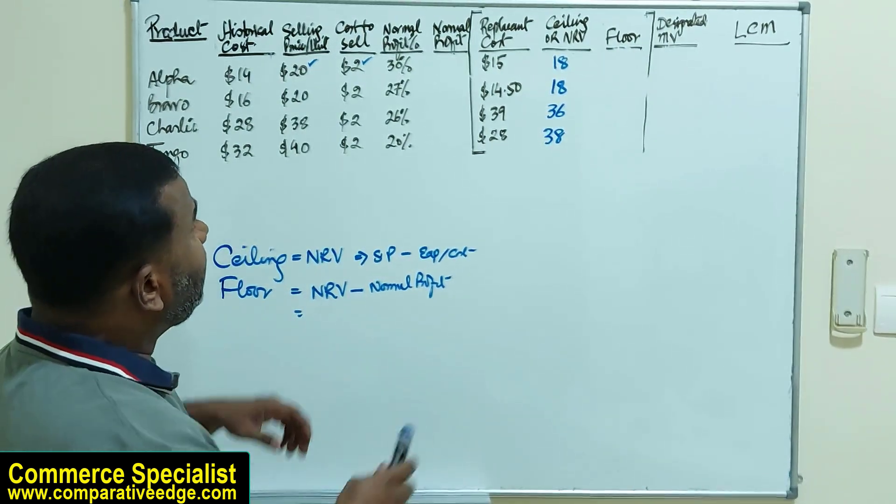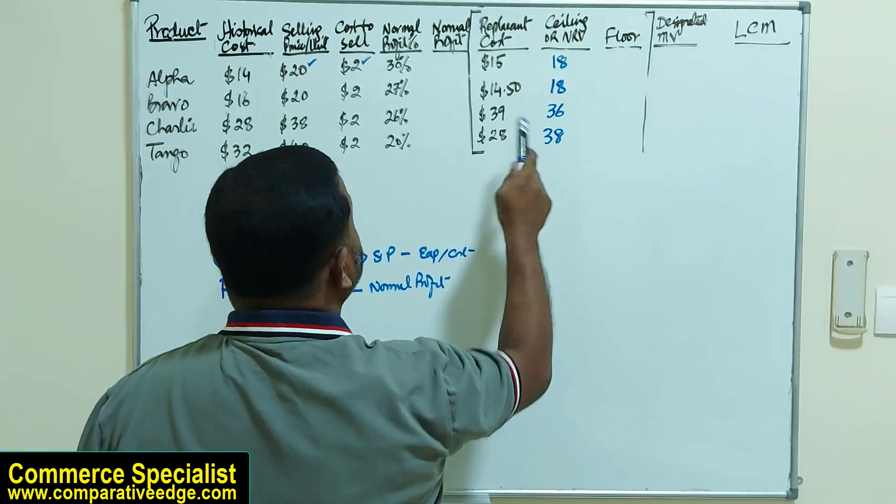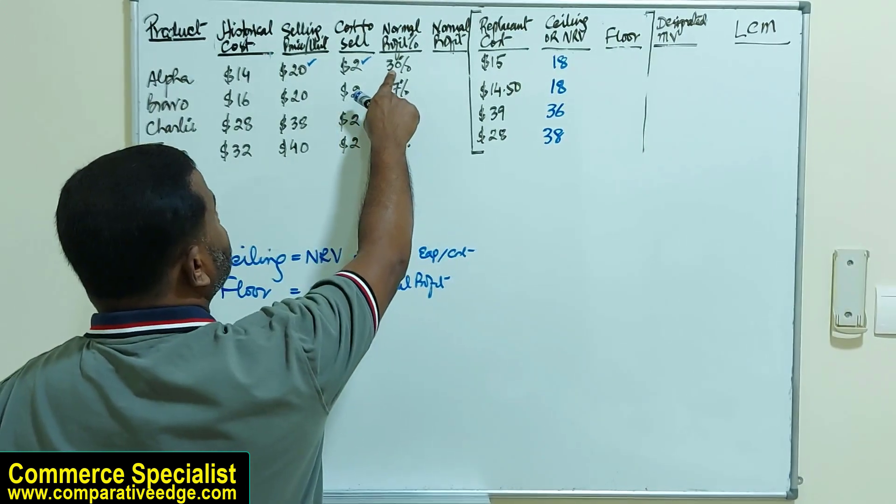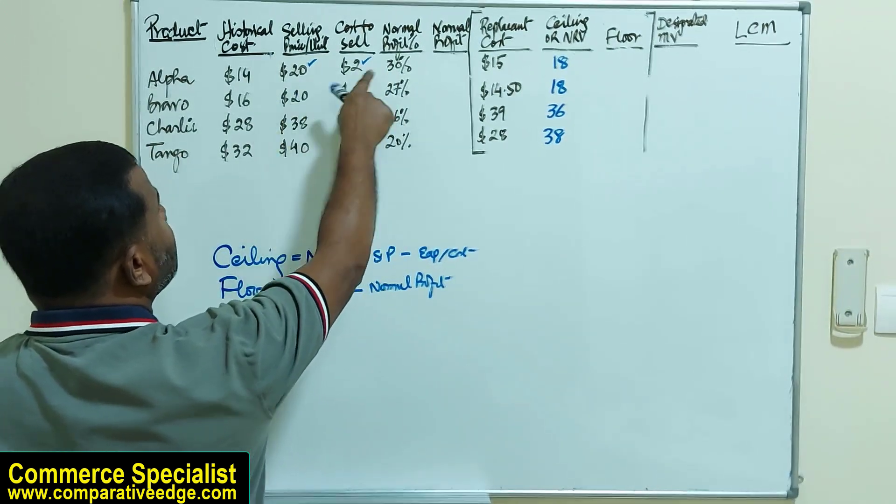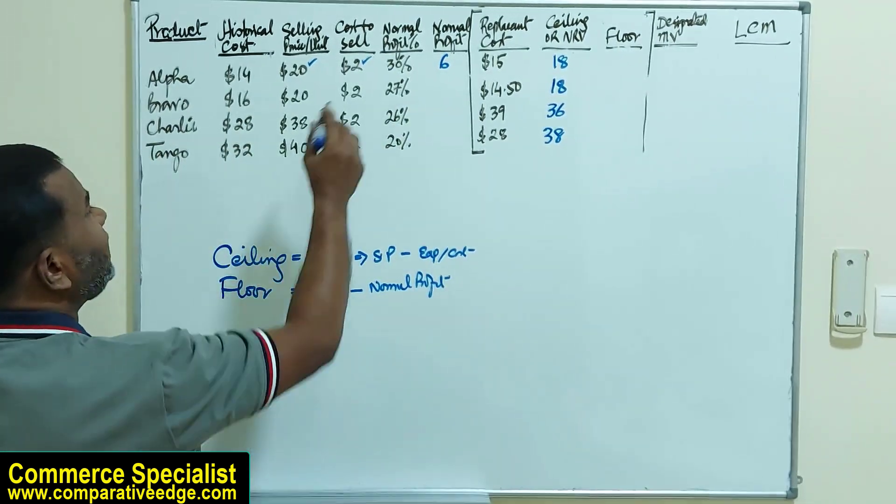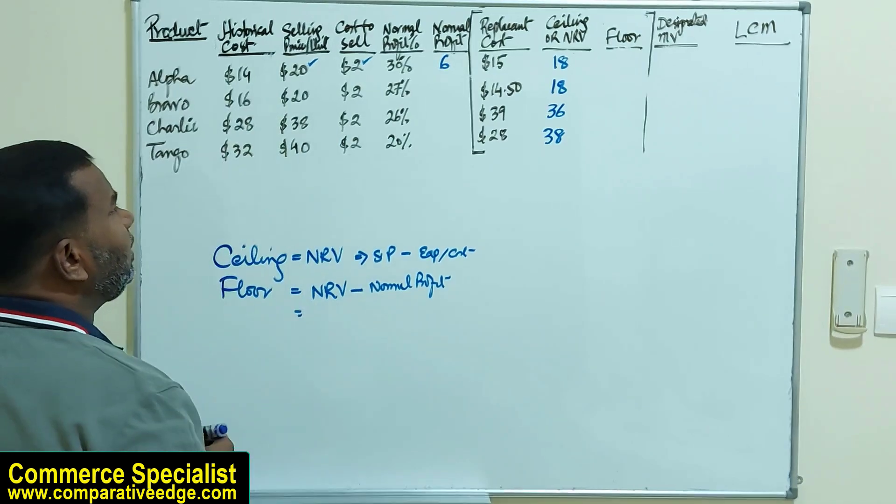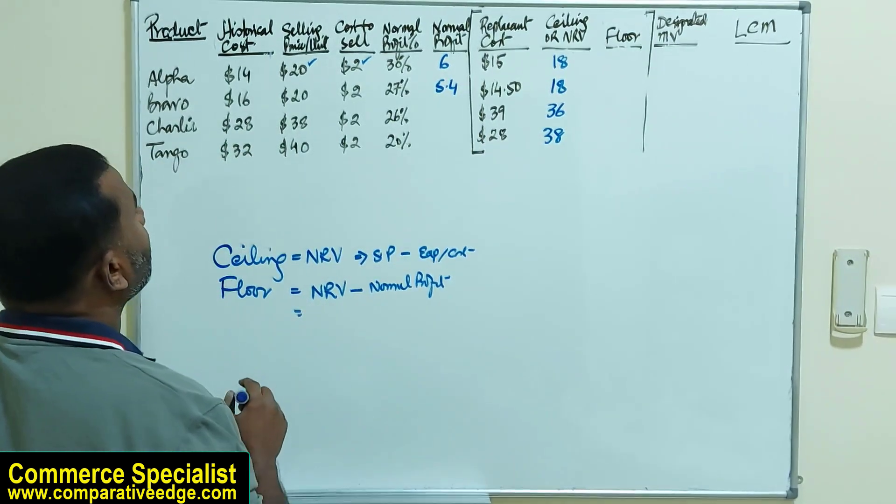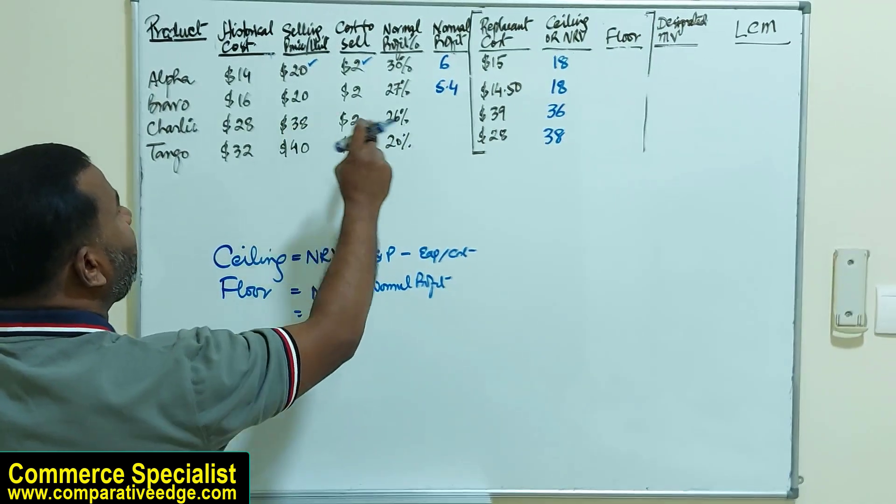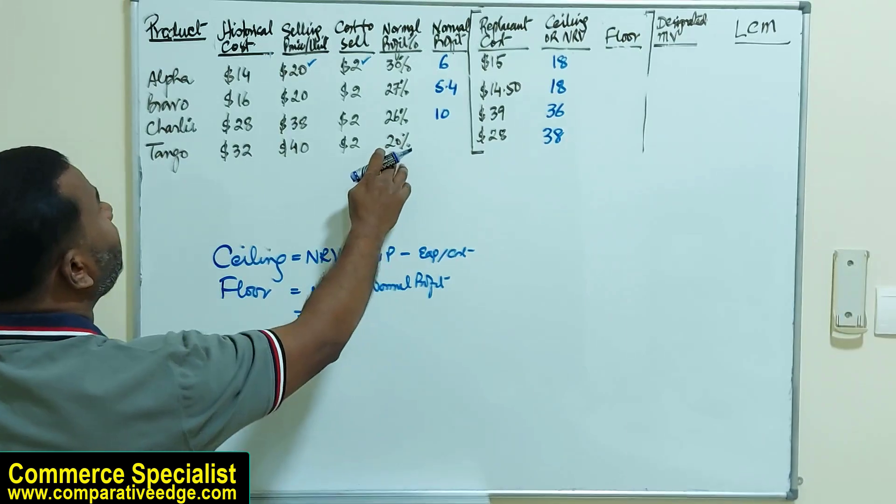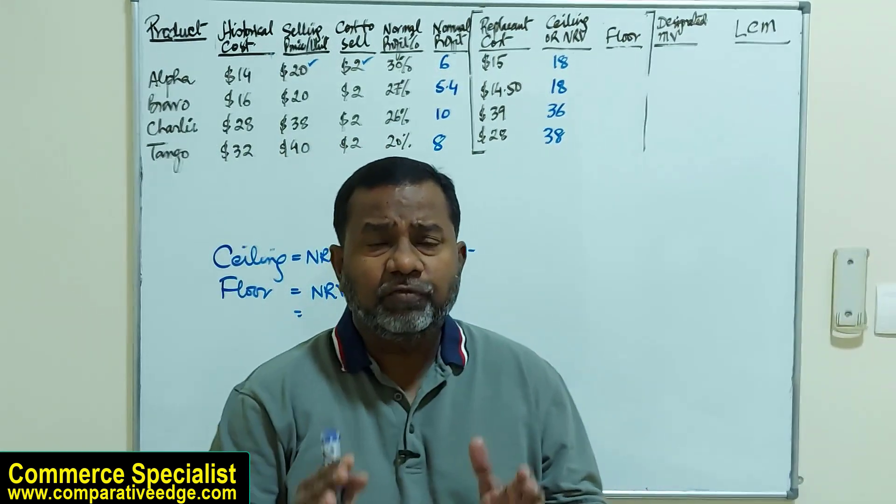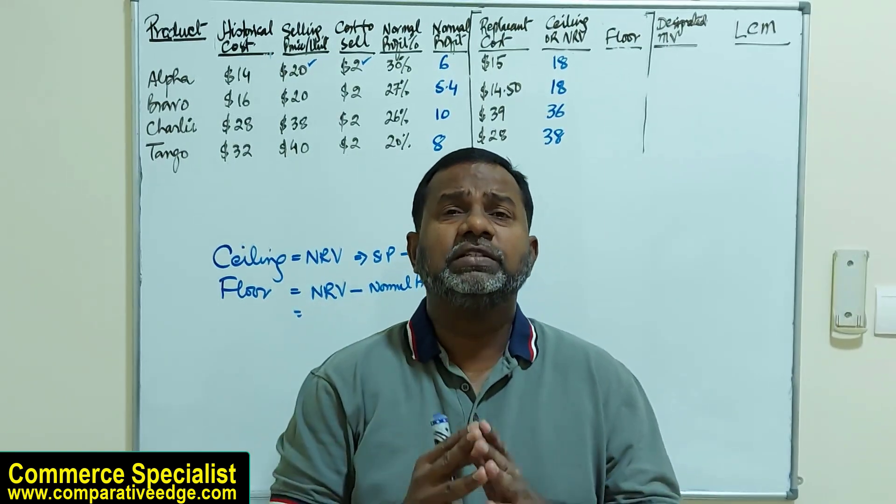We already have NRV. We need to calculate normal profit. Normal profit is 30%, so 30% of $20 will be $6. 27% of $20 will be $5.40. 26% of $38 will be $10, and 20% of $40 would be $8.